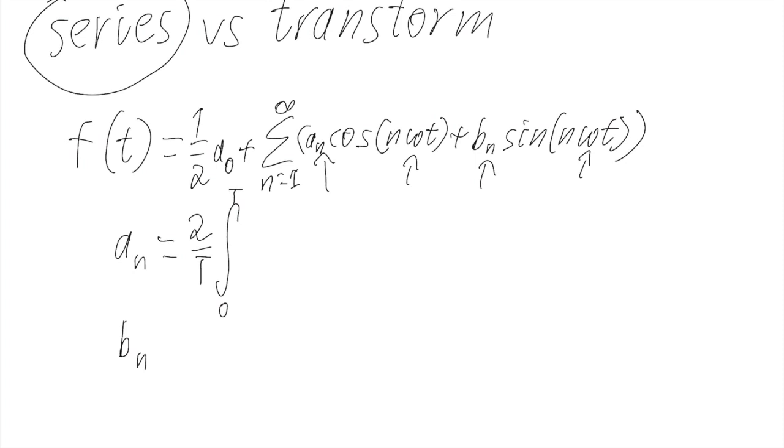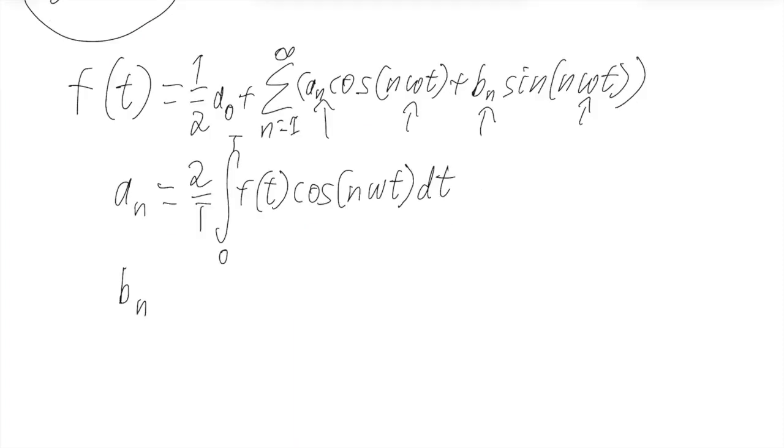So we're integrating over the length of the entire period of f(t) times cosine since this is the cosine coefficient, cosine of n omega t dt.